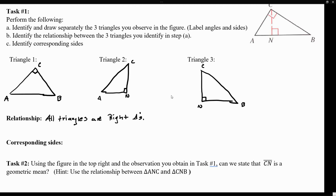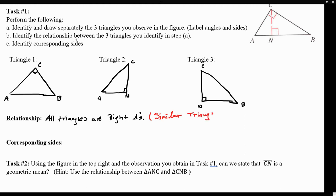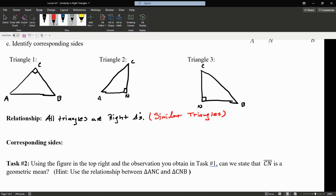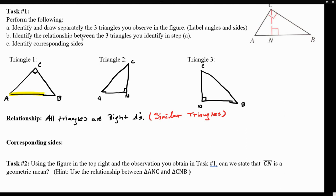Now, is there any relationship we can find among these three triangles? Well, the first relationship is that the big triangle, the small triangle on the left, and the small triangle on the right are all right triangles. So we have that all triangles are right triangles. But now, if they're all right triangles and the only distinction between them is perhaps the size, then we can call them similar triangles. And if they're similar triangles, therefore we can identify corresponding sides.